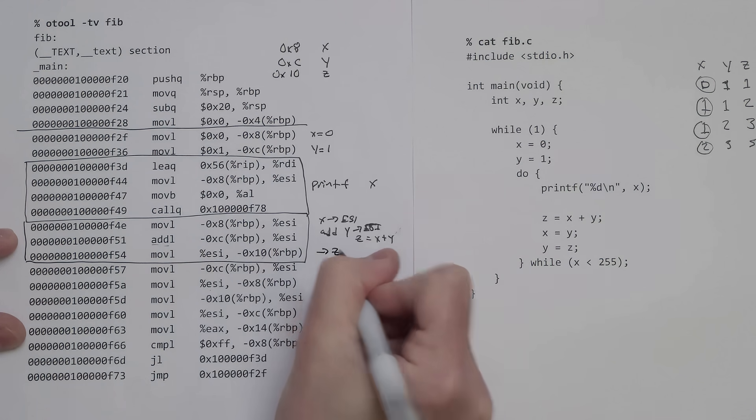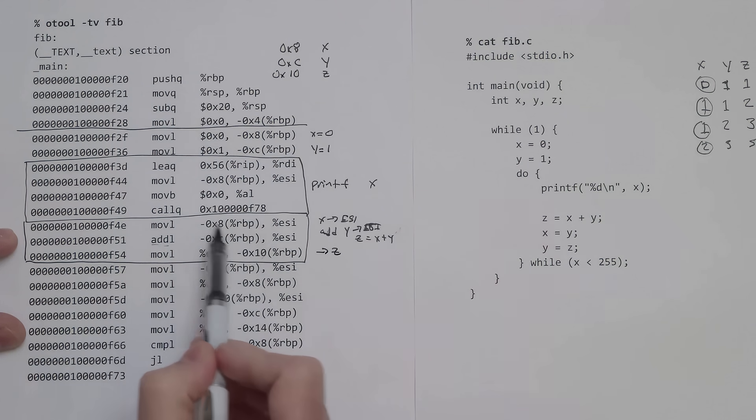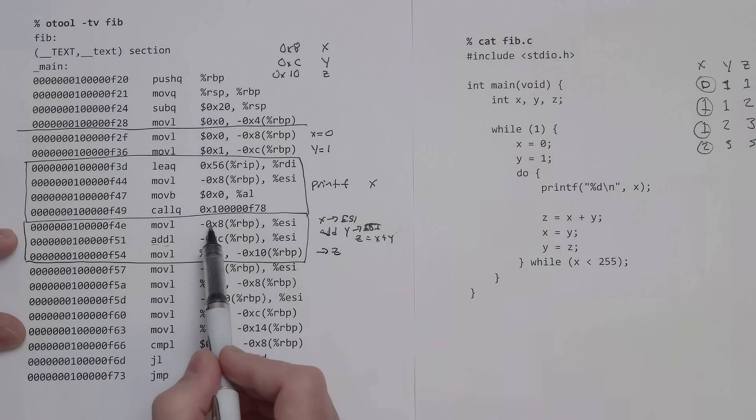These three lines are basically doing z equals x plus y. We're getting x and putting it into ESI, adding y to it, and then putting the sum back into z.